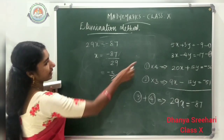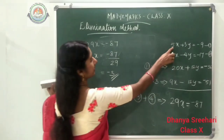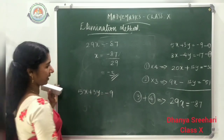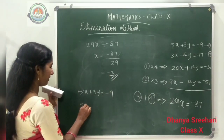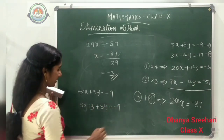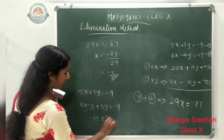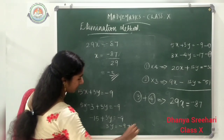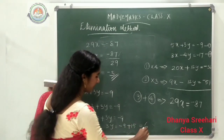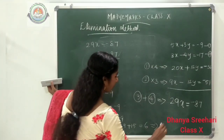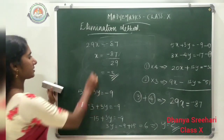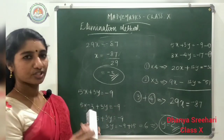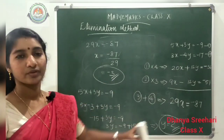Put x equals minus 3 into the first equation: 5x plus 3y equals minus 9. So 5 times minus 3 plus 3y equals minus 9, giving minus 15 plus 3y equals minus 9. Then 3y equals minus 9 plus 15 equals 6, so y equals 6 divided by 3, which is 2. The solution is x equals minus 3 and y equals 2.